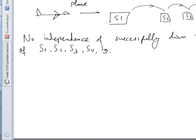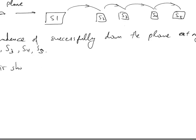The hint the book gives is totally incorrect, because the event that the plane is shot down at station S1 is not independent from the event that the plane is shot down at station S2. To reach S2, it has first to pass through S1, so the outcome of S1 actually influences what happens at S2 and any subsequent station. So there is no independence of events here.